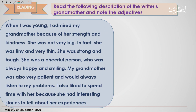Let's read it all together: 'When I was young, I admired my grandmother because of her strength and kindness. She was not very big; in fact, she was tiny and very thin. She was strong and tough. She was a cheerful person who was always happy and smiling. My grandmother was also very patient and would always listen to my problems. I also liked to spend time with her because she had interesting stories to tell about her experiences.' Now take 30 seconds to note down the adjectives.